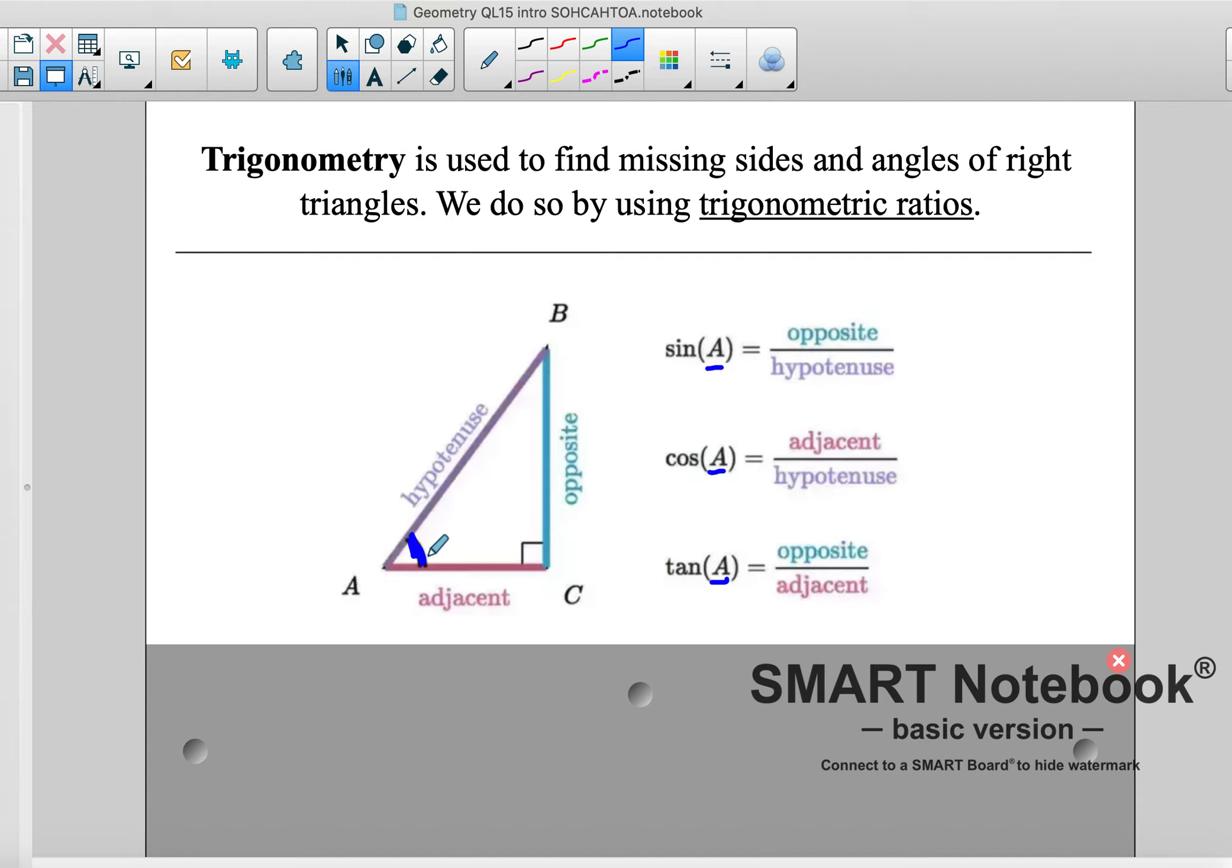So we need to look at a couple of things. The sides. Adjacent, that means next to. So adjacent means next to. So obviously this angle A is next to this side AC. So that would be my adjacent side.